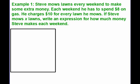We want to figure out what sort of math we're seeing. The first sentence doesn't really tell us anything. The second sentence tells us each weekend Steve has to spend $8 on gas for his lawnmower. Spending money means taking money away from Steve, so every weekend Steve is going to subtract $8 from the amount of money he has. That's part of our expression.